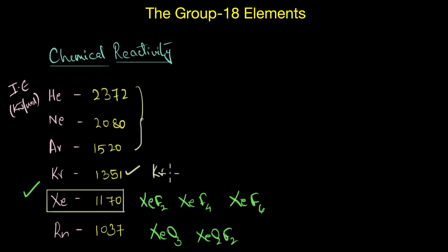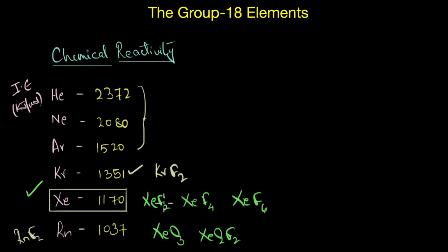Now as radon is highly radioactive and has no stable isotopes, a lot of work has not been done on this particular element. Only RnF2 and a few other complexes are known. Now needless to say that none of these compounds are actually naturally occurring. We force xenon to react under specific experimental conditions to form these compounds, and it was a scientist named Neil Bartlett who succeeded at making this happen.